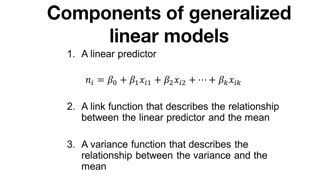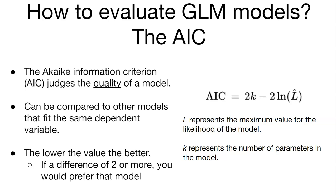When you run generalized linear models, you may want to compare different models. In linear regression we use the R-squared value, which tells you the proportion of variability explained by your model. When dealing with different kinds of data, we use the AIC — the Akaike Information Criterion — to judge model quality. AIC is calculated as 2k minus 2 times the log-likelihood of the model. Ideally, you choose the best model based on the lowest AIC value — the lower the value, the better.